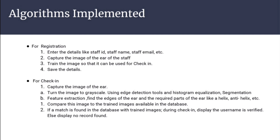For check-in, i.e. verification purposes, an image of the ear is captured. This image is then converted into a grayscale image and various pre-processing steps such as edge detection, histogram equalization, segmentation, etc. are applied. After that, feature extraction from the required parts of the ear such as helix, anti-helix, lobule, tragus, etc. is done, and this is then compared to the trained images available in the database.